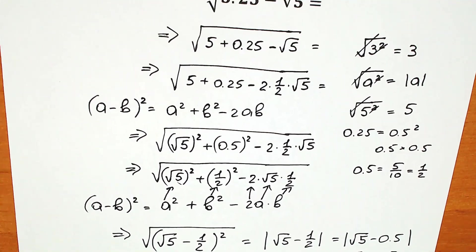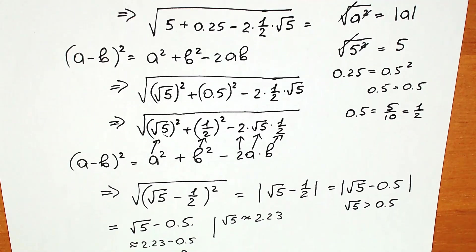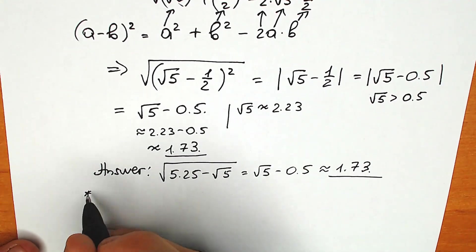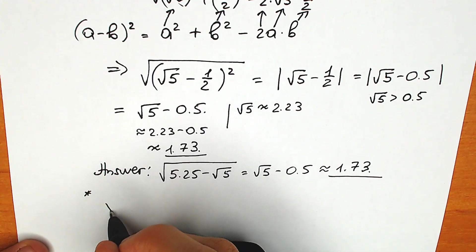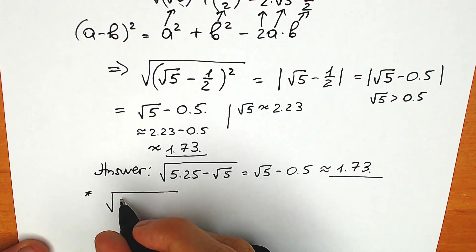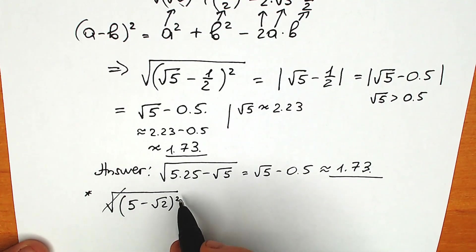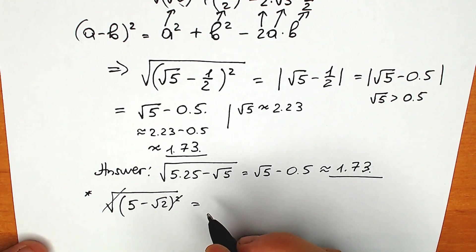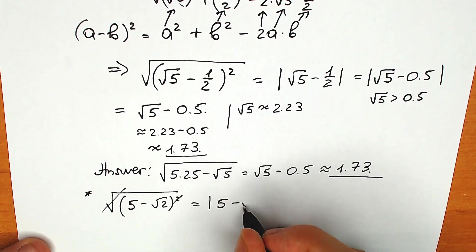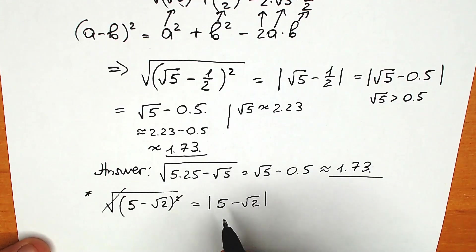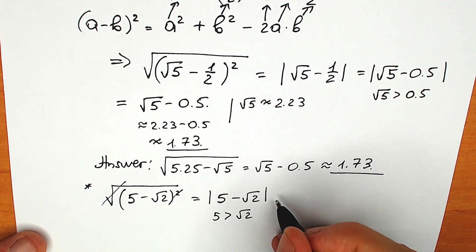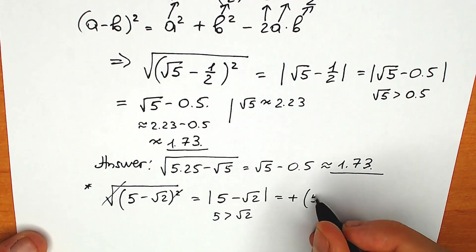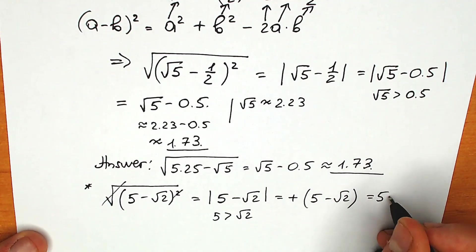Now I'm going to show you really important tricks about absolute value, because a lot of students forget about it. For example, imagine you have square root of (5 − √2)². You can cancel the square root and the square, but the result is not simply 5 − √2 — it's the absolute value of (5 − √2). You need to check the sign. In this case, 5 > √2, so the expression is positive, and the answer is just 5 − √2.